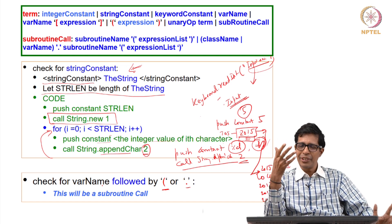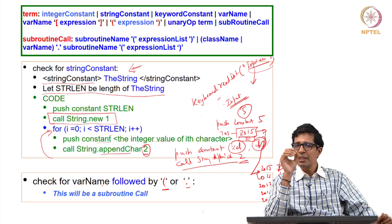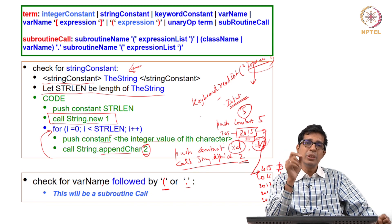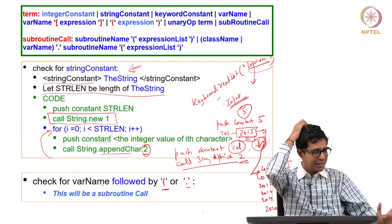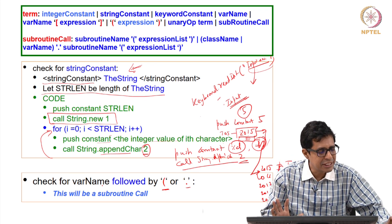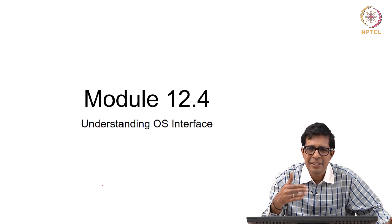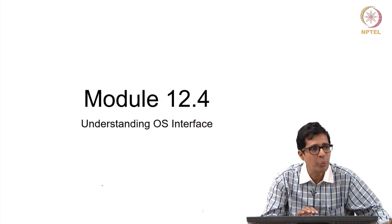Both of us can improve — I can improve my explanation and you can improve your understanding — but the best thing is that you work and write the code. Unless you do this final coding you will never see the joy in this course, so finish this coding. Once you finish, your compiler is ready, and the next thing we need to understand before executing programs is the OS interface.